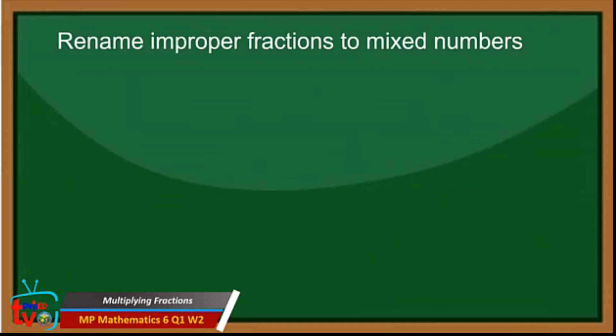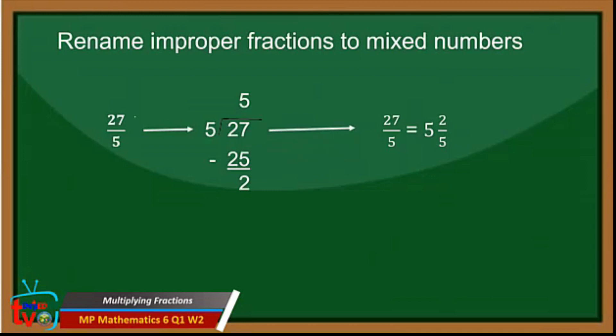How about if you are going to rename improper fractions to mixed numbers? For example, 27 over 5. This is an improper fraction because the numerator is greater than the denominator. So to change this into a mixed number, divide 27 by 5. 27 divided by 5 is equal to 5 remainder 2, since 5 times 5 is equal to 25 and 27 minus 25 is equal to 2. So 27 over 5 is equal to 5 and 2 fifths.